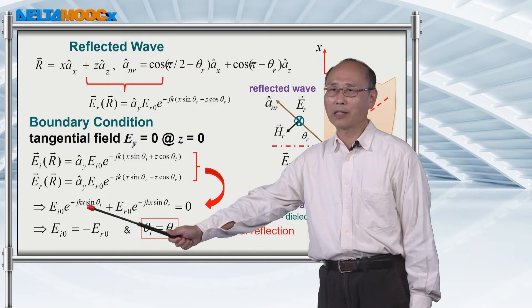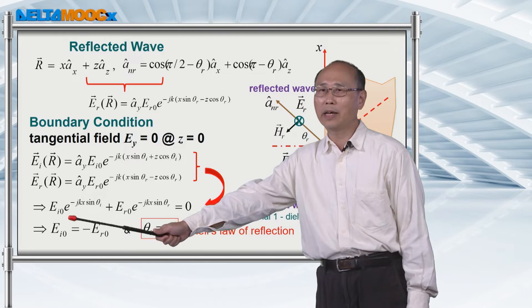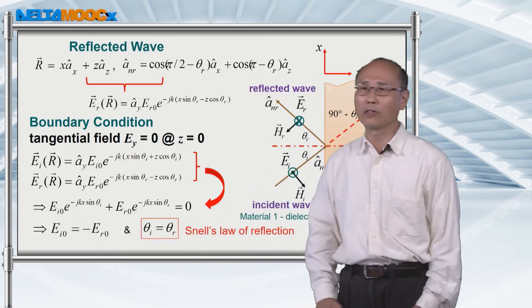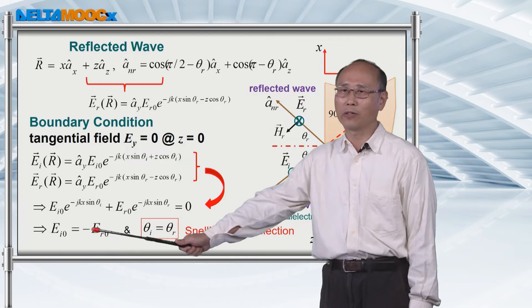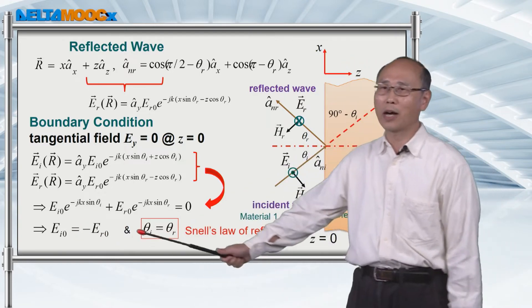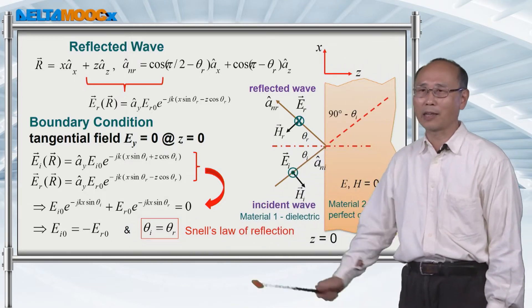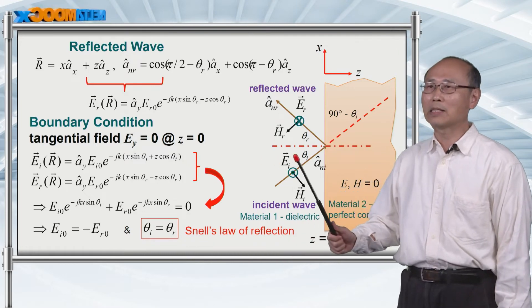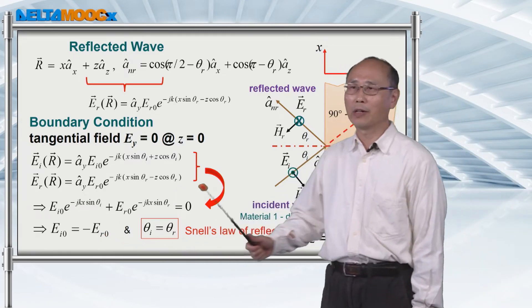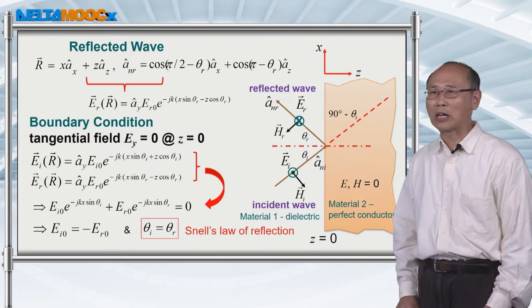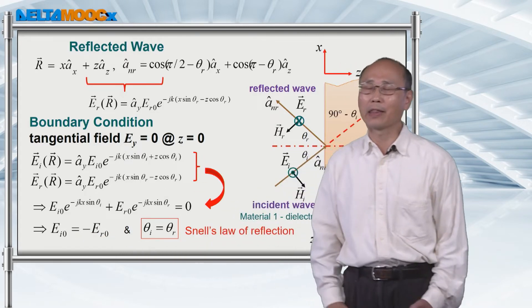Once you agree that the phase terms are equal to each other, you can quickly write down that E_i0 equals minus E_r0. This means that the reflected field is out of phase by 180 degrees with respect to the incident field. So from just one expression, you come up with two conclusions: the incident angle equals the reflection angle, and the electric field transverse to the plane of incidence is 180 degrees out of phase between the incident and reflected fields.